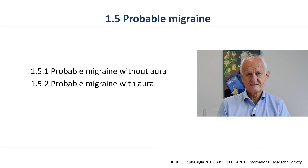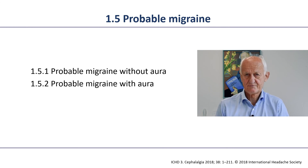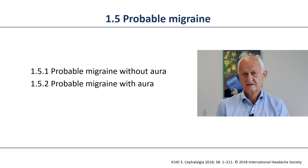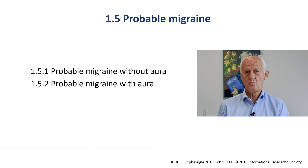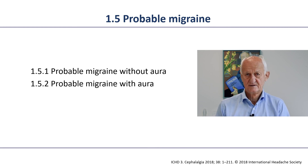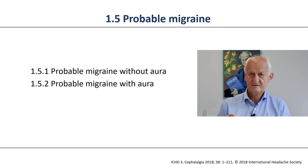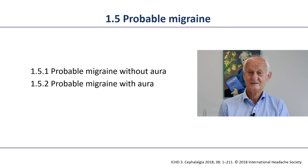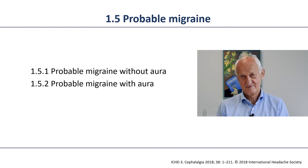The last entity in this chapter is probable migraine. A probable category exists in all chapters of primary headaches. A probable diagnosis is given to patients who fulfill all but one criterion for a headache disorder. If a patient fulfills all criteria for migraine without aura except one, they are classified as probable migraine without aura. However, if the same headache fulfills the definite criteria for tension-type headache, then the tension-type headache diagnosis should be given instead.